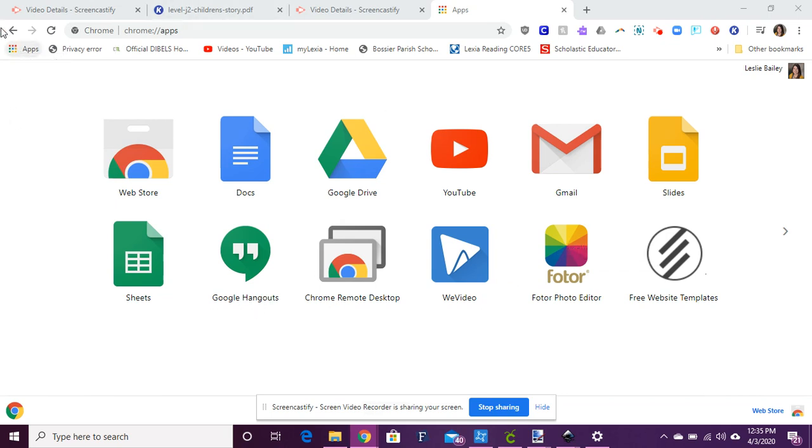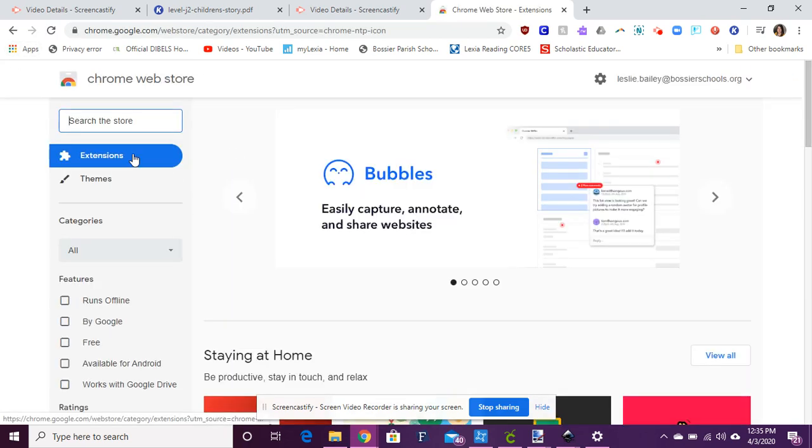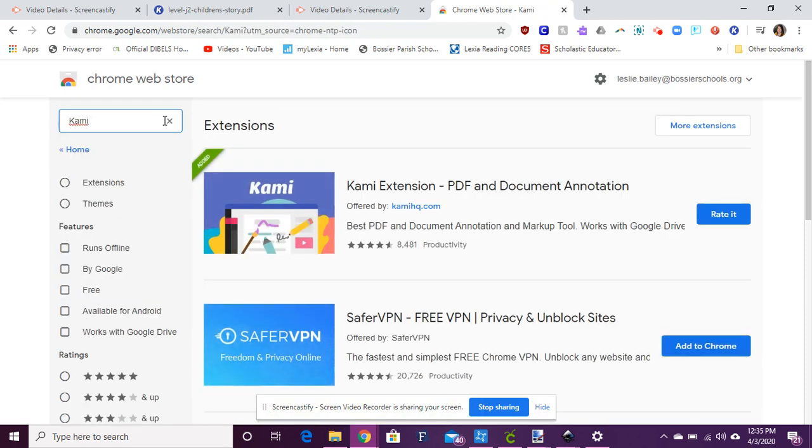So the first thing you'll do is you'll click apps over here in the left hand corner and then the first thing that should pop up is the web store. Then you would type in Kami, K-A-M-I, enter, and then on the blue side it's going to say add to Chrome and so you would click it and it's going to place it right here at the top of the toolbox with the K for you to use.